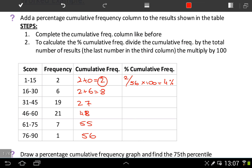Let's look at the next row. Again, we take our cumulative frequency, which is 8, and divide it by the total number of results, which is 56, and multiply by 100, and we get an answer of 14%. Just like that. We keep working this out until we get to the very bottom.